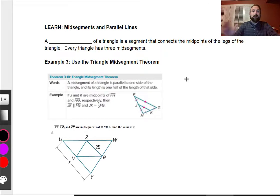Learn mid-segment and parallel lines. A mid-segment of a triangle is a segment that connects the midpoints of the legs of the triangle. Every triangle has three mid-segments. JK are at mid-segment, so that means that JK is going to be half of FG. So if FG right here is 4, JK has to be 2. So looking at this, here's an example.